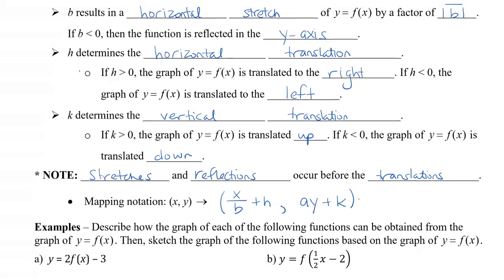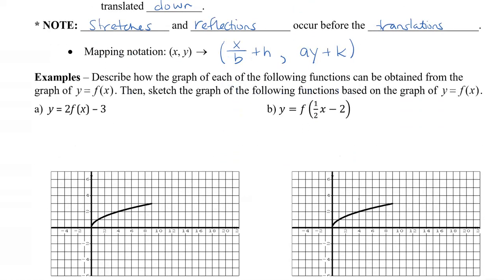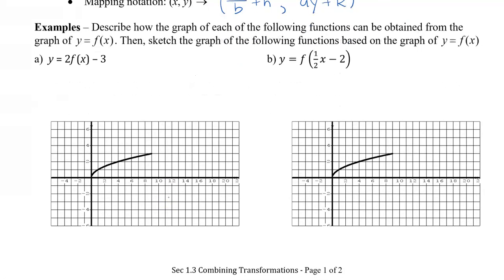So let's take a look at a couple of examples to see how we apply these transformations. Describe how the graph can be obtained from the original graph which is just simply y equals f of x, and then we're going to sketch the graph. So here is the original graph. Here we can see it looks like a square root.